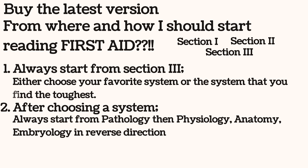After selecting the system, there are four to five things in a system that go in a systematic way: embryology, anatomy, physiology, pathology, and pharmacology. I would suggest you to always start a system from pathology, because that is the highest yield section, then come back to physiology, which is the second highest yield, then read anatomy, and then embryology.